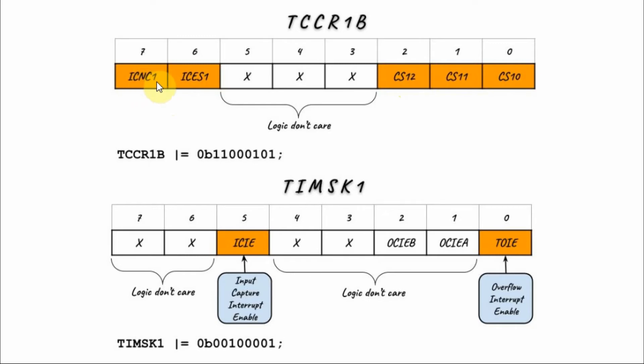We set this bit to 1, this is the input capture noise canceler. And we set this bit to 1, this is the input capture edge select. 1 is for rising edge, 0 is for falling edge, and the C++ statement is shown here. We also need to program the Timer 1 mask register by enabling the input capture interrupt and the overflow interrupt, and this is the C++ statement.